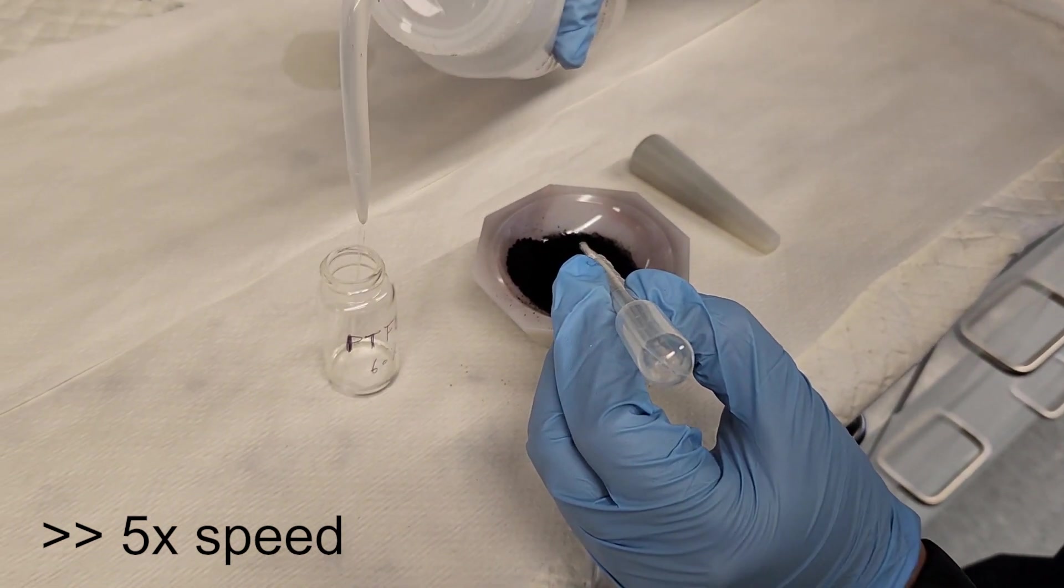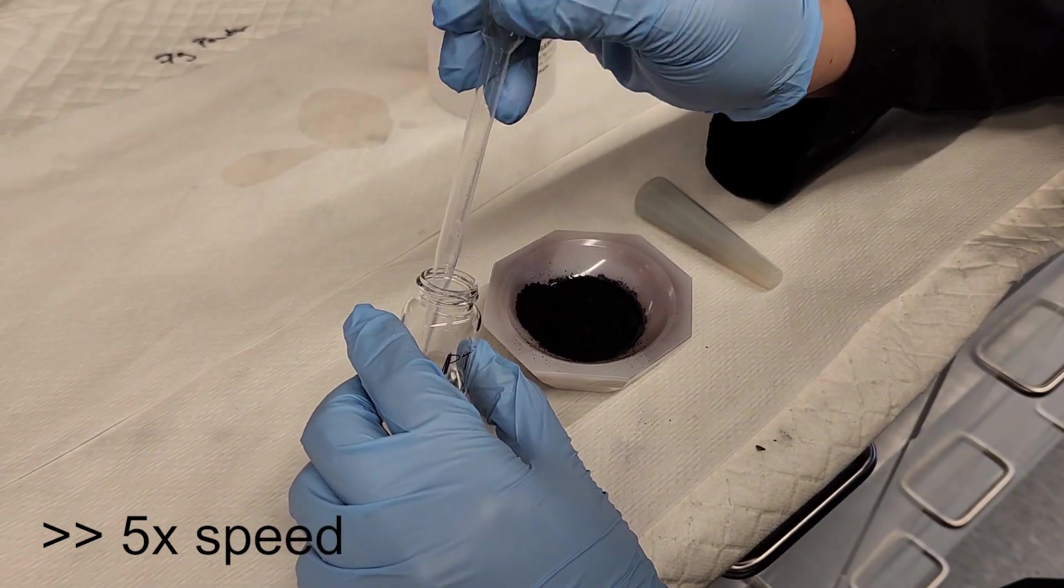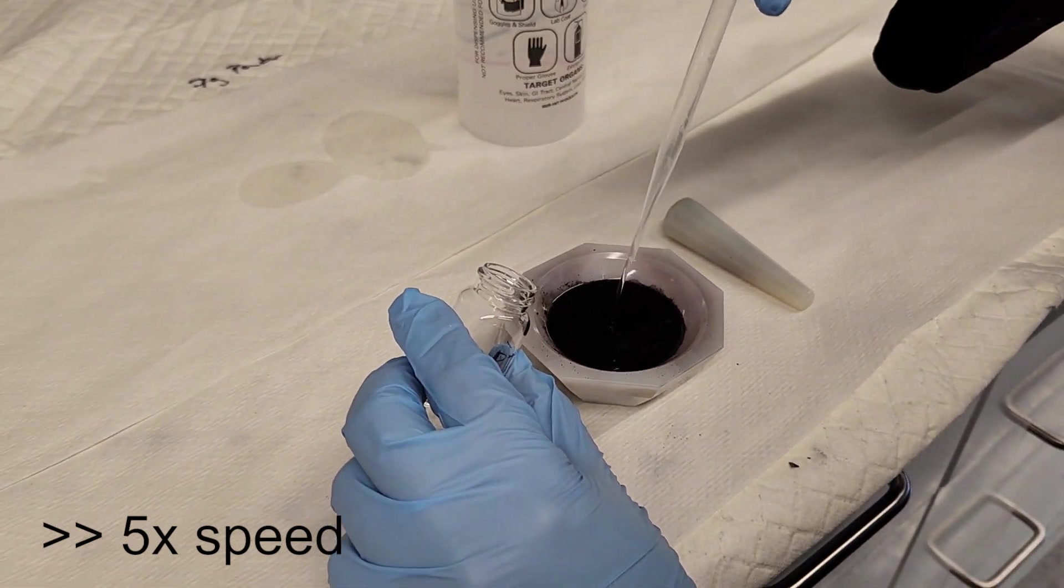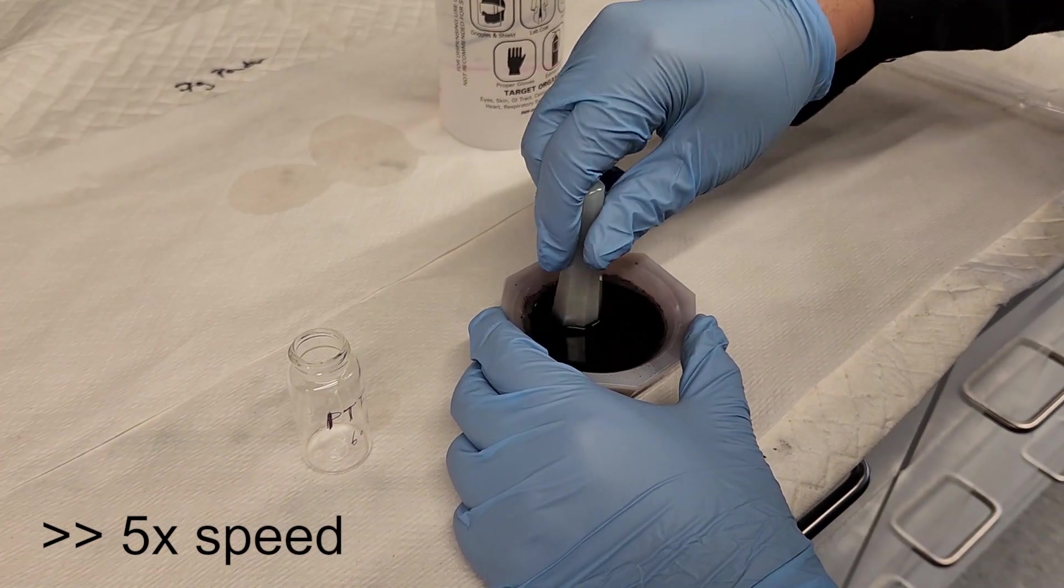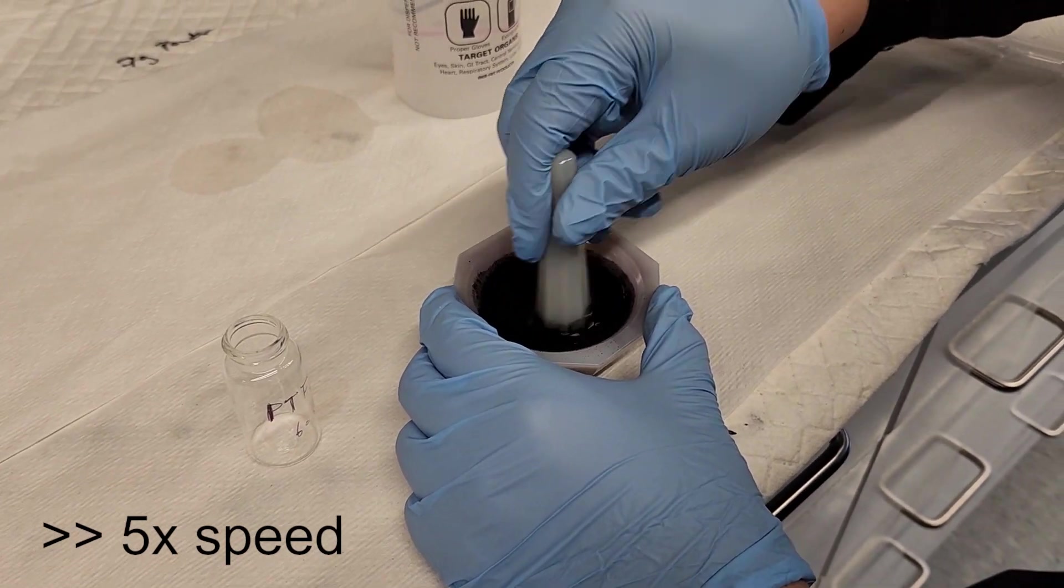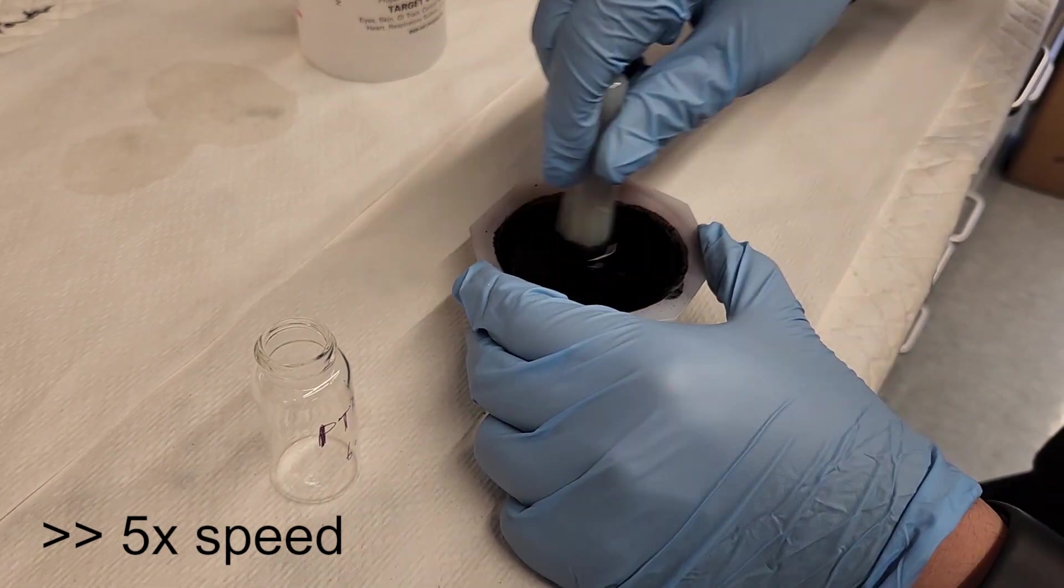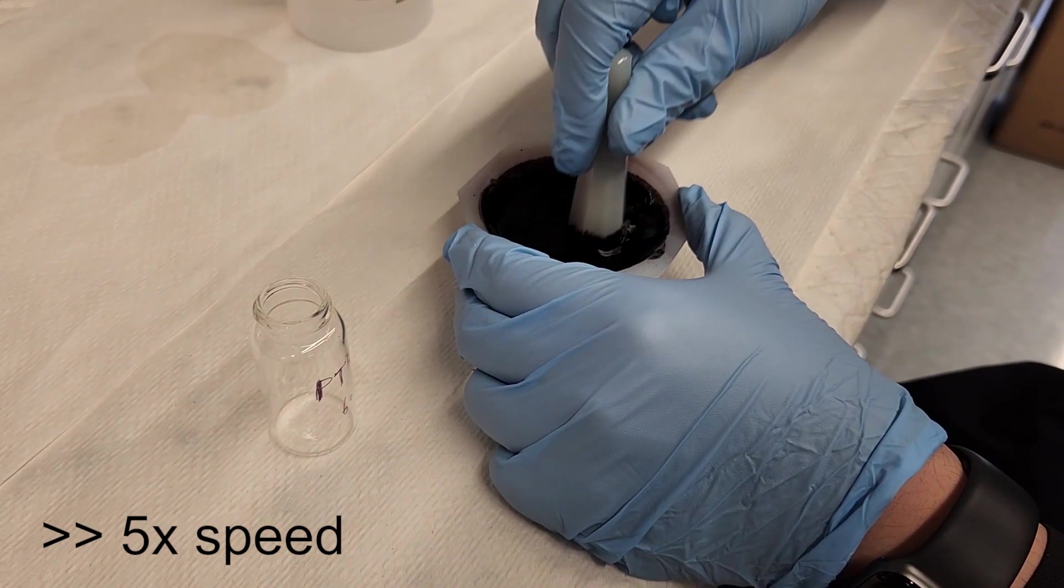We repeat this step to scavenge the remaining PTFE. The mortar is almost full. We mixed activated carbon with the PTFE and ethanol dispersion. Here we stir with the pestle until the ethanol is almost dried out.